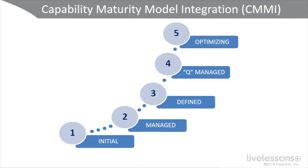This model is from the CMMI Institute, and there are different models you can use — ISACA has COBIT-5, and OpenFAIR has a model as well. Starting at level one, the initial level, we consider our processes and security controls unpredictable, poorly implemented, and basically reactive. There's no proactive capability, very little inline capability to stop an attack. We call this the initial poor level of integration.